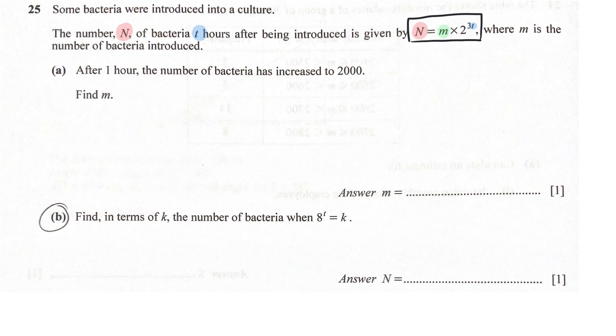You realize you have an unknown M. And actually, our first job is to use info, like in part A, to find out what the value of M is. So let's do that. Number of bacteria is 2,000, this is talking about N. After one hour, this is talking about T. So N equals M times 2 power 3T, and we're going to fit 2,000 here.